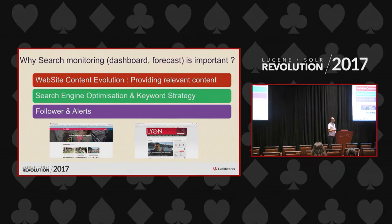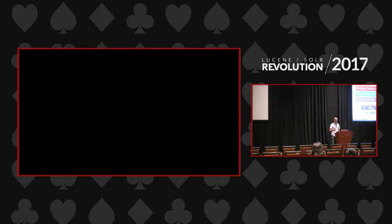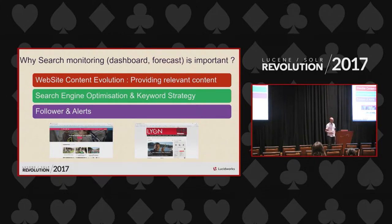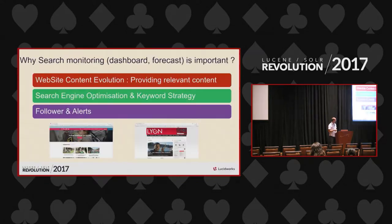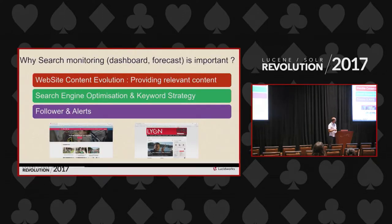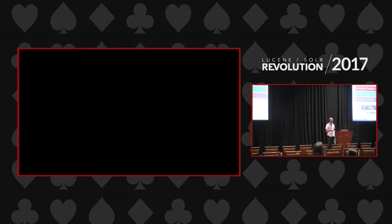Now people want you to provide relevant content. You review your search optimization and keyword strategy — you buy keywords on Google or something. You have followers and alerts; all those things change the way you use the web and the way you reach a website.